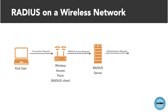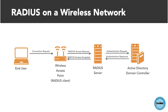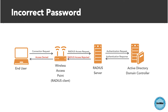The RADIUS server then checks with an external authentication source, such as an Active Directory or LDAP server, to determine whether the user's password is correct. If the password or other authentication mechanism is correct, the RADIUS server sends an access accepted message back to the wireless access point, which then allows the user on the network. If the password or authentication failed, the RADIUS server sends an access rejected message back to the wireless access point, which then denies the user access to the network.